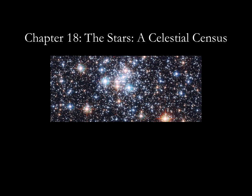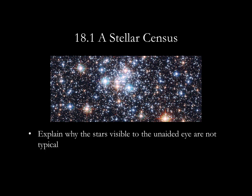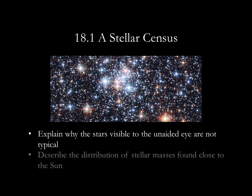Hi everyone, this lecture corresponds to section 18.1 of the OpenStax astronomy text. The material here should allow you to explain why the stars visible to the unaided eye are not typical, and describe the distribution of stellar masses found close to the Sun.